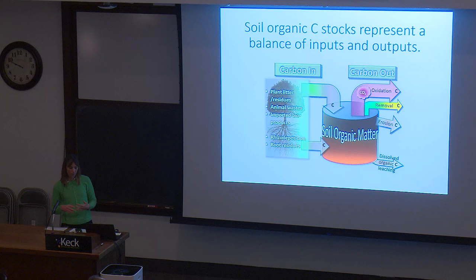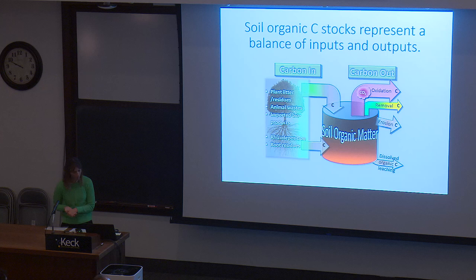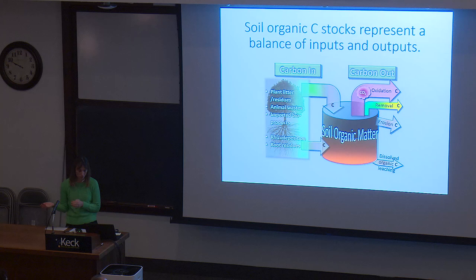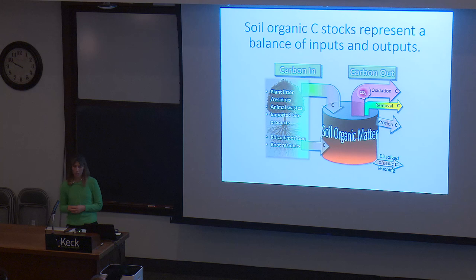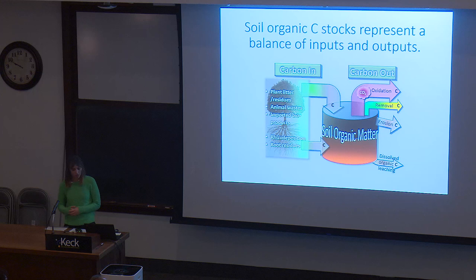Soil organic carbon stock in a given field represents the balance of inputs and outputs. A lot of it is coming from plant litter, but also animal waste, compost, rhizodeposition, and root residues. The outputs are primarily microbial respiration releasing CO2, but could also include removal through grain harvest, erosion, and dissolved organic carbon leaching. In our cropping systems, the major outputs are oxidation of carbon and removal of carbon.